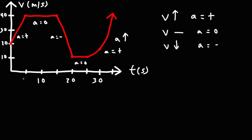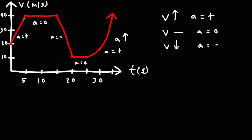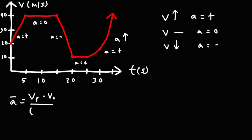How can we determine the acceleration of the particle during the first five seconds? We have the velocity on the y-axis in meters per second, and we have the time on the x-axis in seconds. Acceleration is the rate of change of velocity, so it's going to be the change in velocity divided by the change in time — the final velocity minus the initial velocity divided by the time interval. In other words, the acceleration on a velocity time graph is equal to the slope of the graph. The slope represents the rate of change.